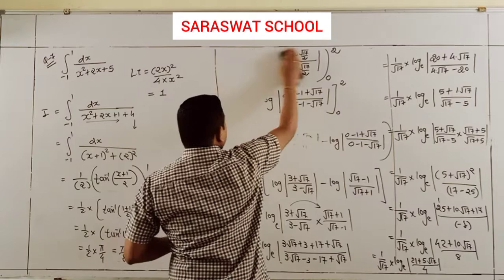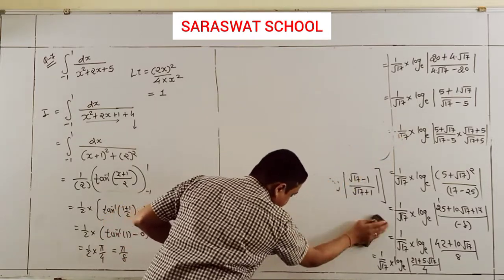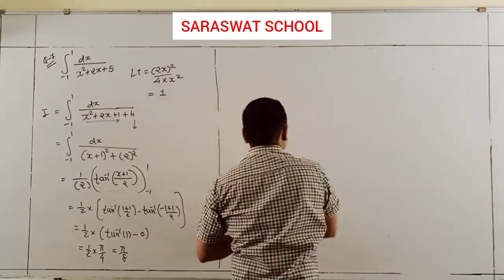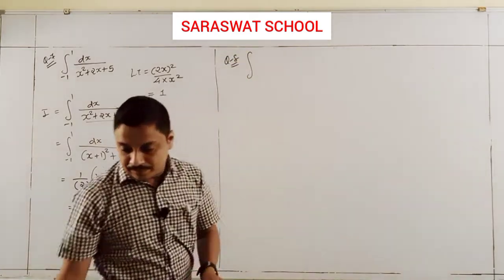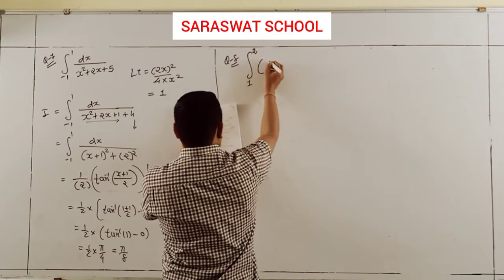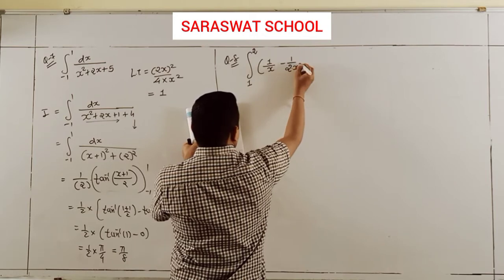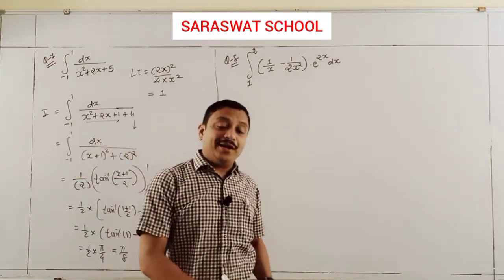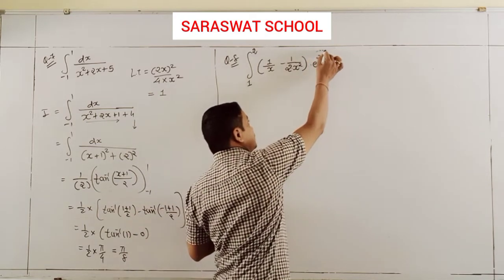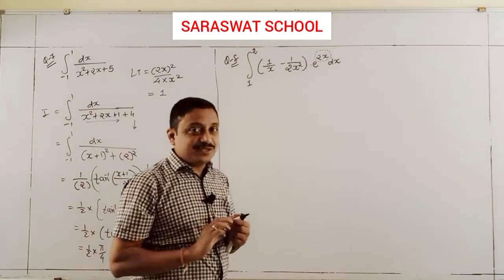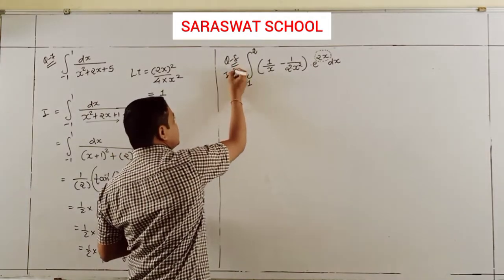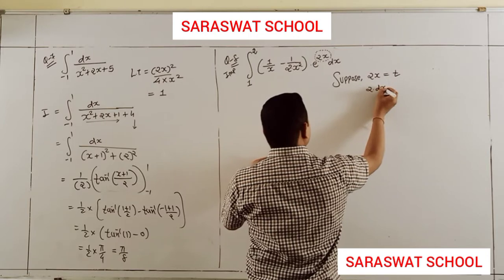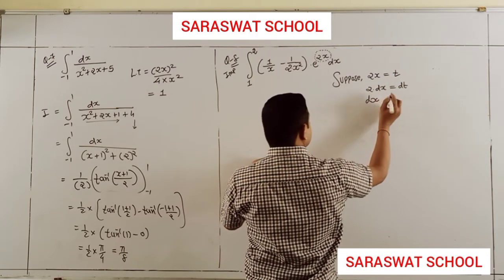Final answer is π/8. Continue going ahead to Question 8: integrate from 1 to 2 of (1/x - 1/(2x²)) × e^(2x) dx. Here the formula for e^x[f(x) + f'(x)] applies, but the 2x is a disturbance. So suppose 2x equals t.